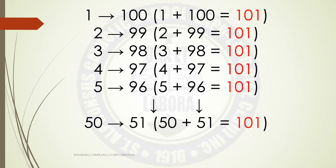You also have 2 added to 99, that is also equal to 101. 3 added to 98 is equal to 101. 4 added to 97 is 101. 5 plus 96 equals 101. And 50 added to 51 is equal to 101.